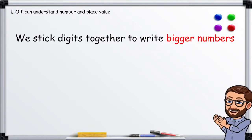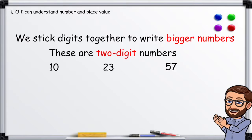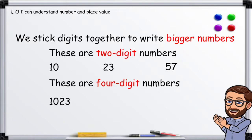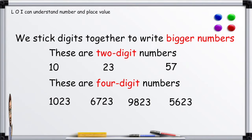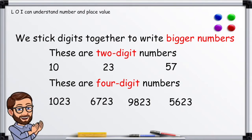We stick digits together to write bigger numbers. These are two digit numbers: 10, 23, 57. These are four digit numbers: 1,023, 6,723, 9,823, 5,623.